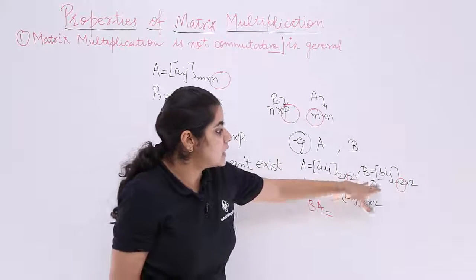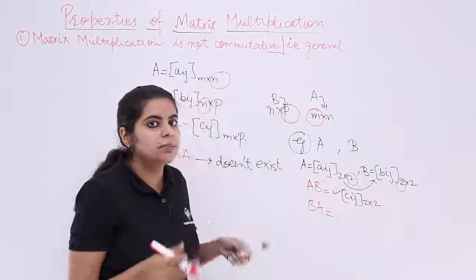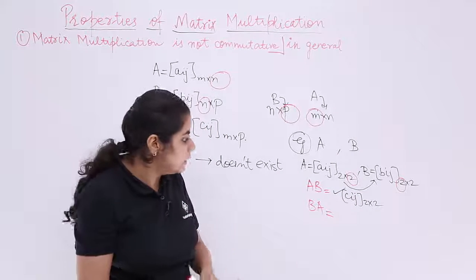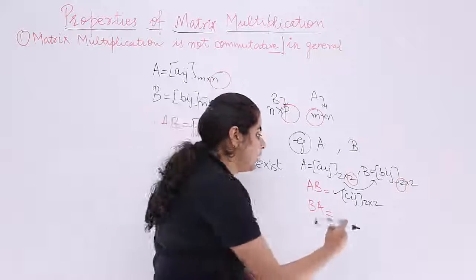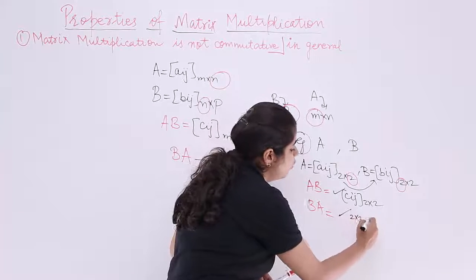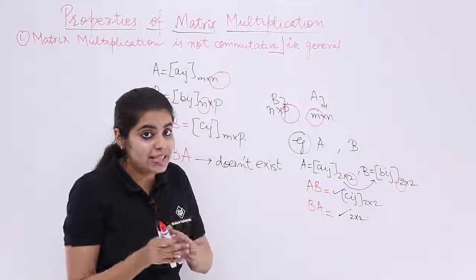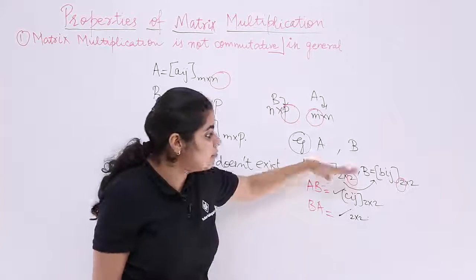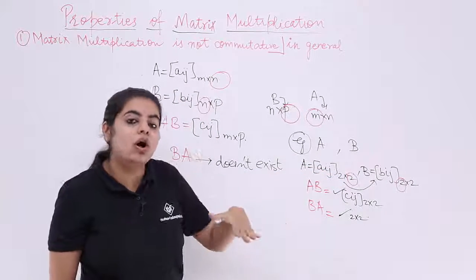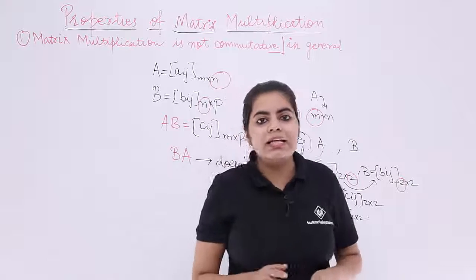And these matrices, if given to me, are equal. Say both the matrices are equal. Then BA will also exist and the order will again be what? It will be a 2×2 matrix only. The case when the order is also same and the matrices are also same, the order and the elements both are same. In that case, commutativity is followed.